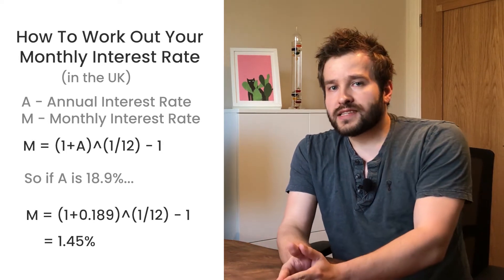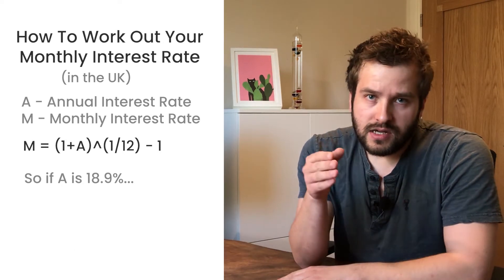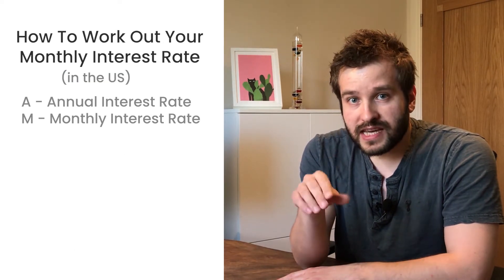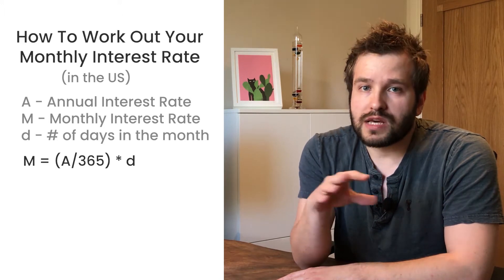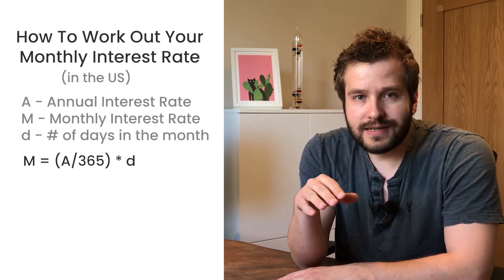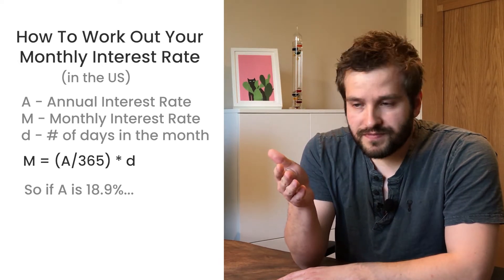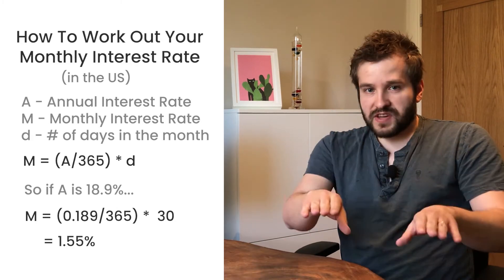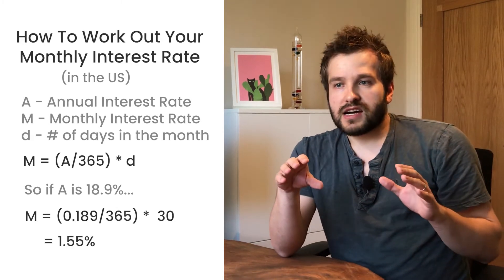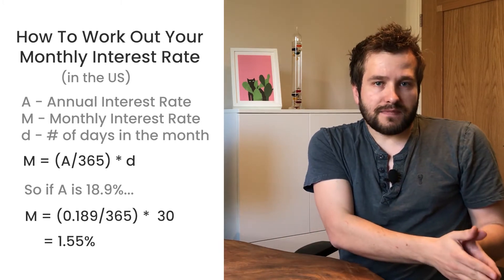In the US, the monthly interest rate is worked out slightly differently. You take the APR and divide it by 365 to get the daily interest rate, because all APRs in the US work on a non-compound basis. You then multiply it by the number of days in the month — so multiply by 30. Once you've figured out the interest on a monthly basis and done your average daily balance calculations, it's relatively straightforward: you just multiply them together and add up the total interest.